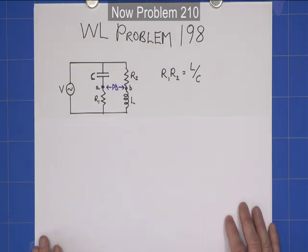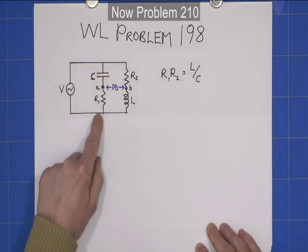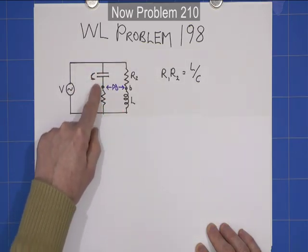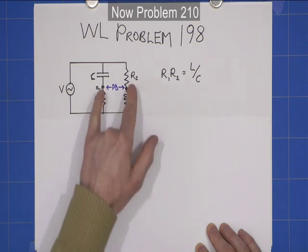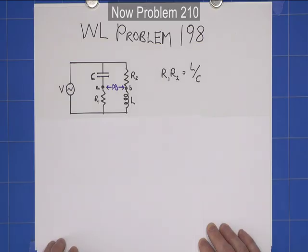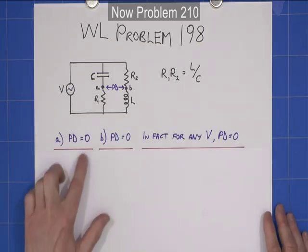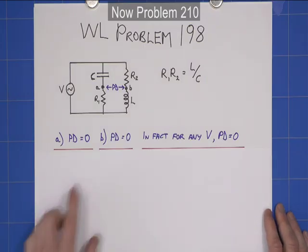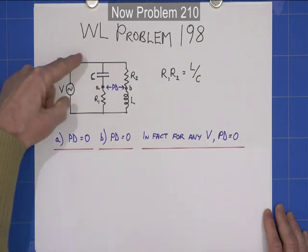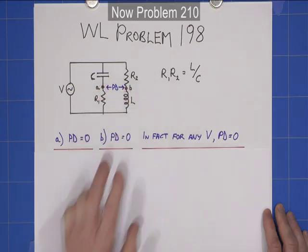Now, I was all set to calculate the current through there, current through there, work out the potential difference, potential drop across here and across here, and then work out what the potential difference is across there. Totally unnecessary. So, after a little bit of thought, I wrote the answer down. And here is the answer. For part A, the potential difference across A and B is zero. It's also zero for part B. And in fact, for any varying or any input voltage at all, it's always going to be zero across A and B.